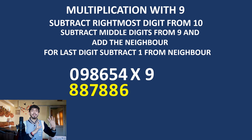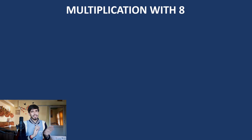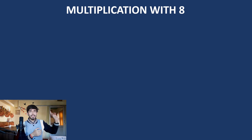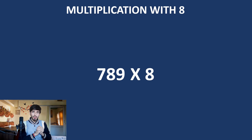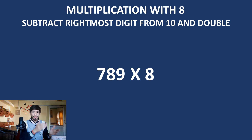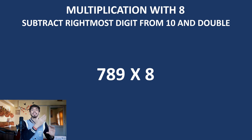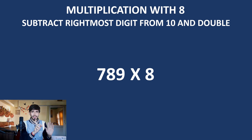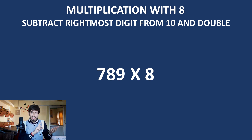Now let us look at multiplication with 8, which is really similar to multiplication with 9. Let us multiply a number with 8. Similar to 9, subtract the rightmost digit from 10 — but this time, double the result. Here we have 9: 10 minus 9 is 1, and double of 1 is 2. So we write 2.